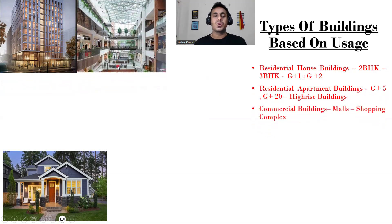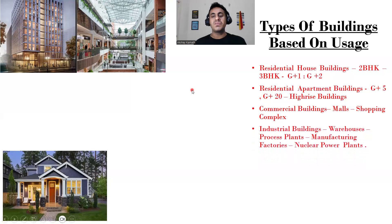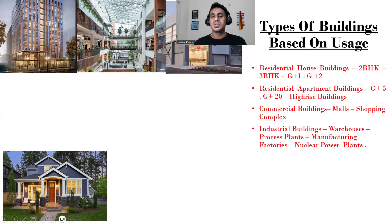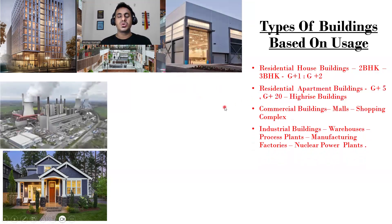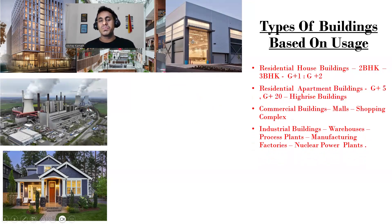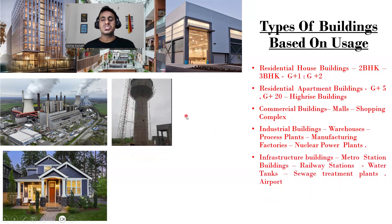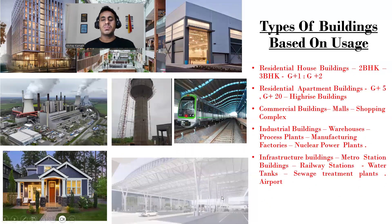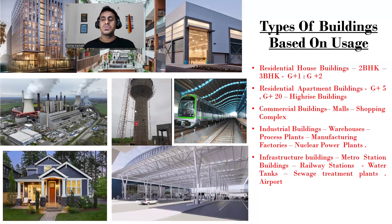Next are commercial buildings, like malls and shopping complexes — we call them commercial complexes or commercial buildings. After that we have industrial buildings, like warehouses, manufacturing plants, factories, and nuclear power plants. These are made from PEB structures. Then we have infrastructure buildings like metro stations, airports, water tank construction, and sewage treatment plants.